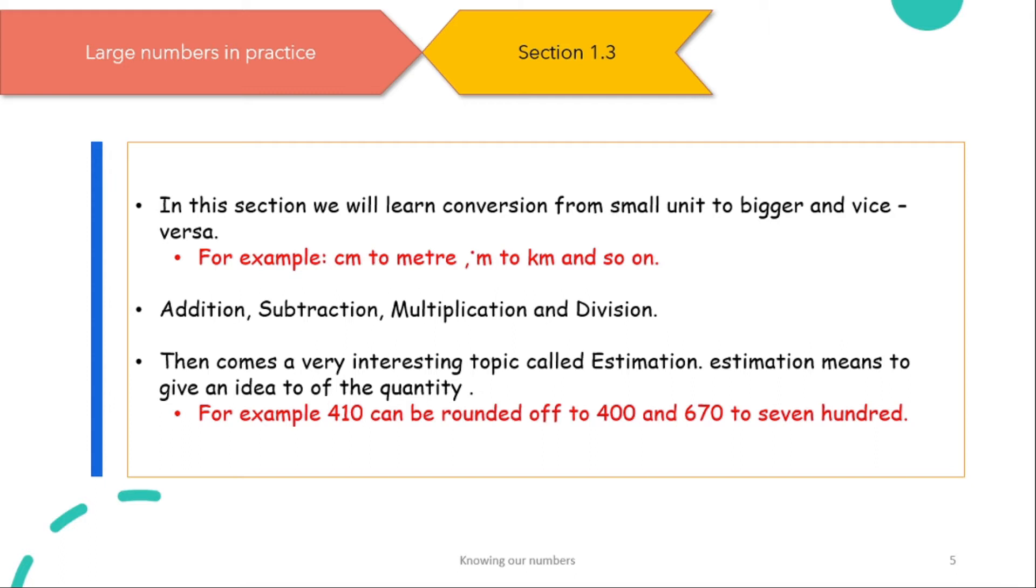These are the four very basic principles of math. And to spice things up a little, we will use some word problems in this. Then comes a very interesting topic called estimation. Estimation means to give an idea of the quantity. For example, 410 can be rounded off to 400 and 670 can be rounded off to 700.